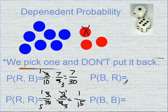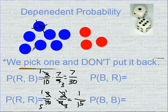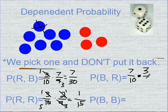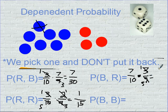Probability of getting a blue first: seven out of ten. Then a red — I multiply by three red out of a total nine now. I can't reduce seven out of ten, but I can reduce three over nine: divide both by three, giving one over three. Seven times one is seven, ten times three is thirty. The answer is seven over thirty.